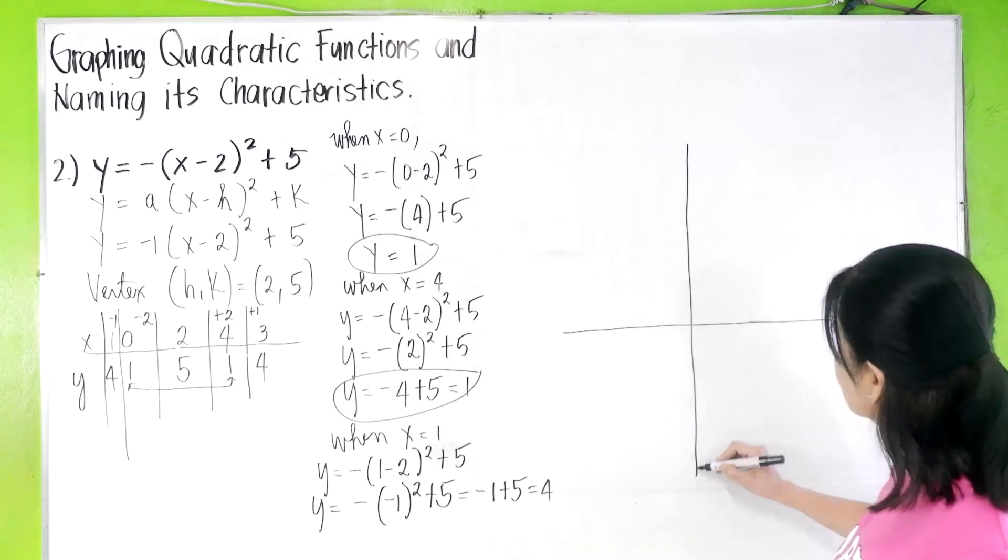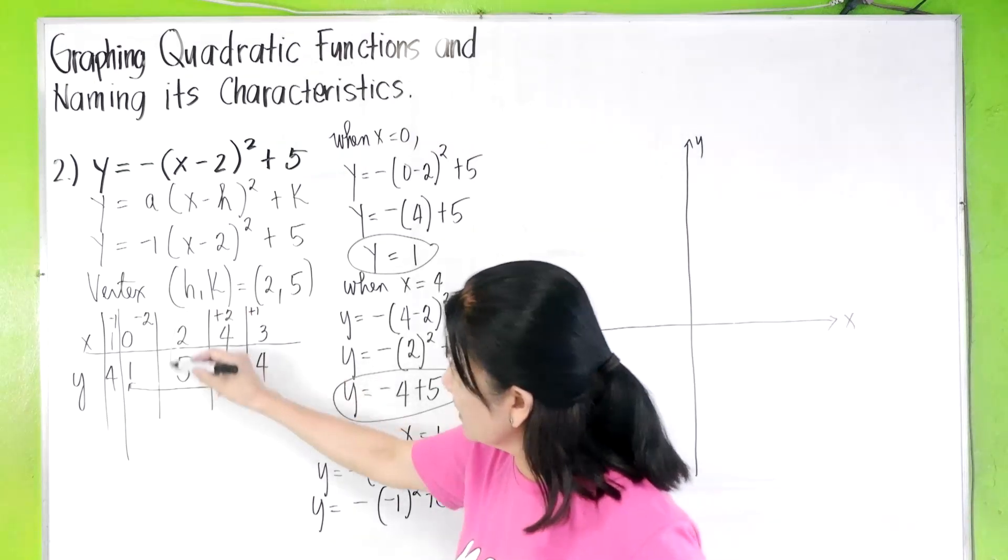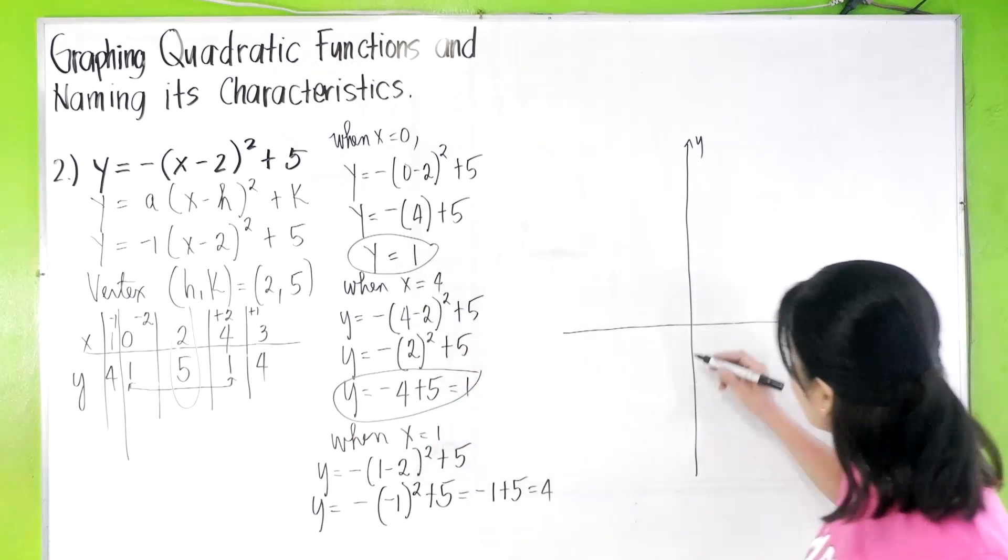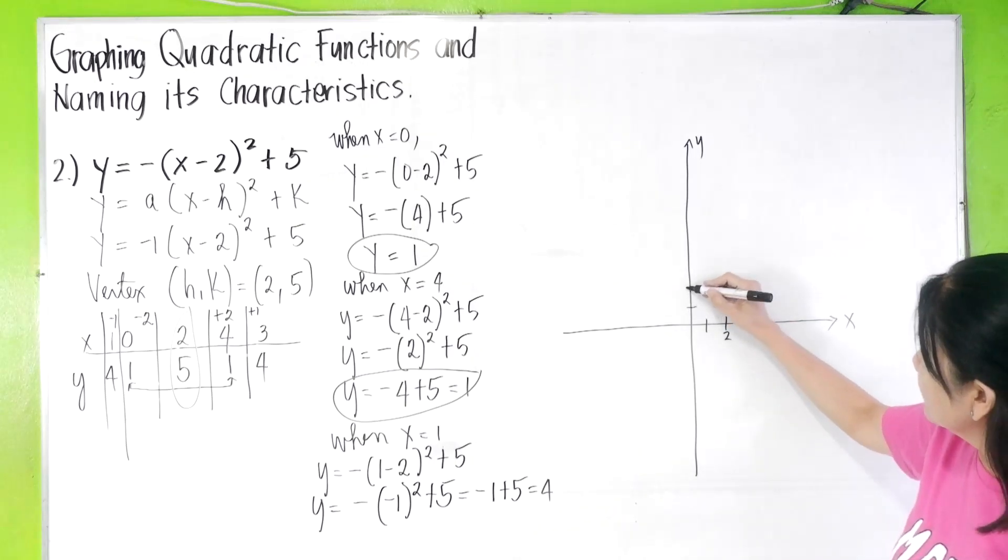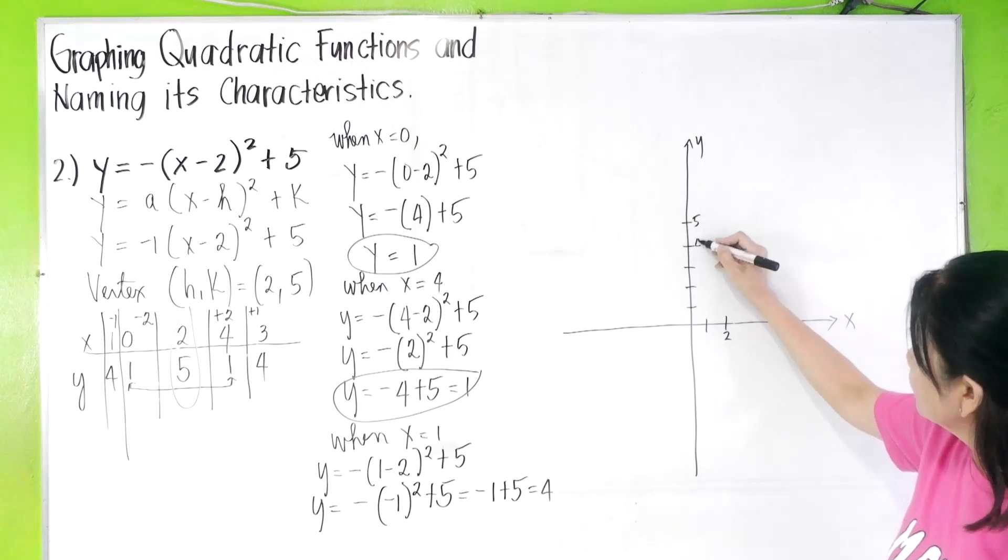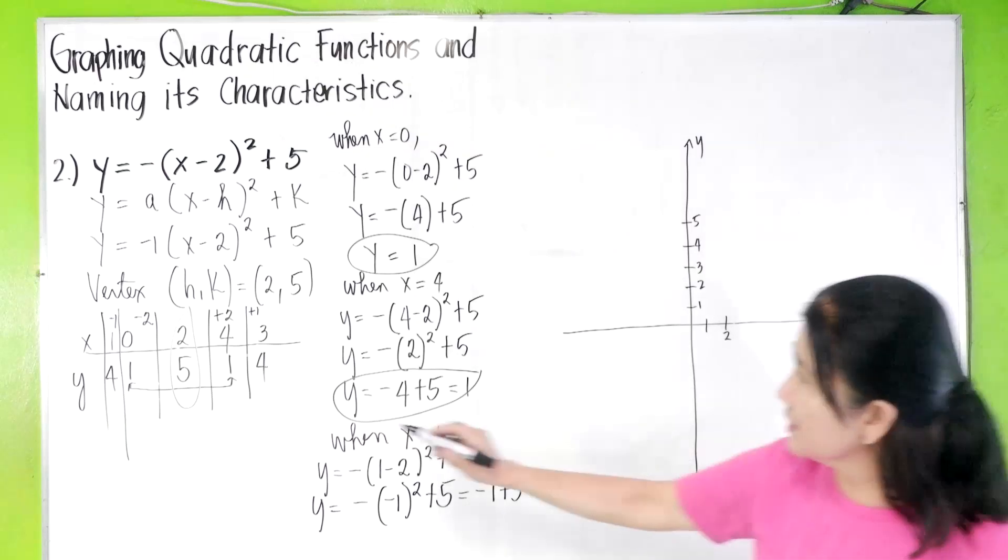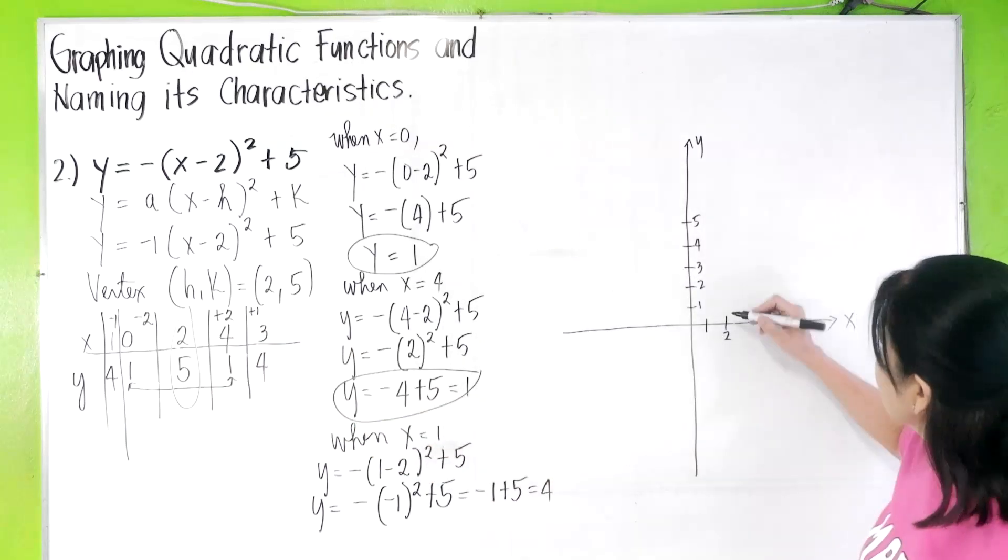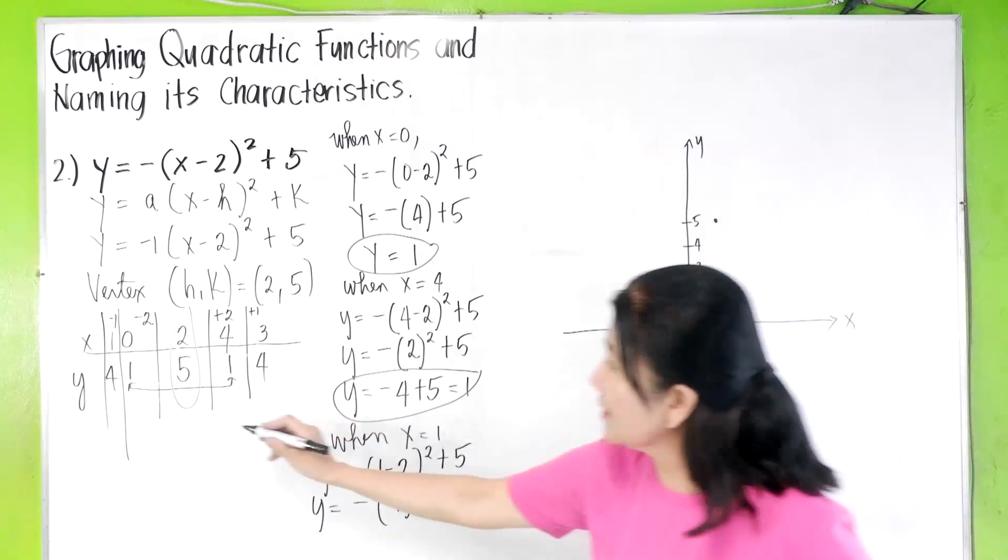So let's now plot the values in the coordinate plane. Let's say this is our x-axis and the y-axis. Always plot the vertex first. Two, five, one, two, one, two, three, four, five. So we have there two, five, the vertex, two, five. So two, five, this is it. There.